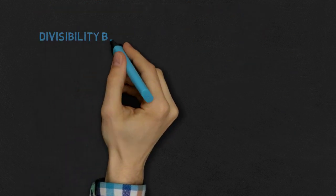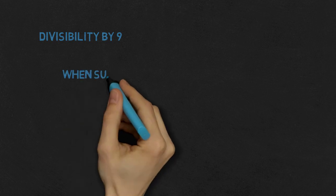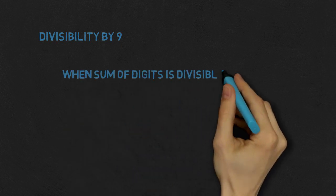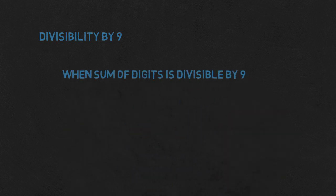Divisibility by 9 is similar to that of 3: if the sum of digits is divisible by 9, then the whole number is also divisible by 9. But this time we can ignore only 0s and 9s when summing up the digits. Have a look at two quick examples.